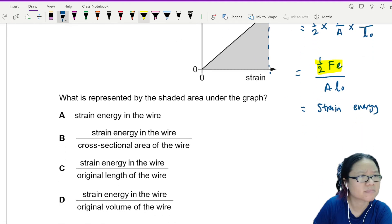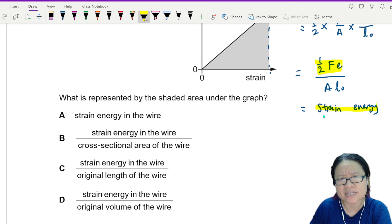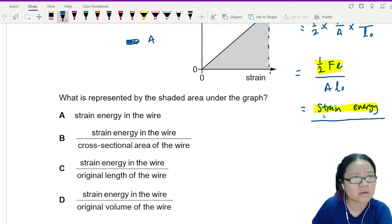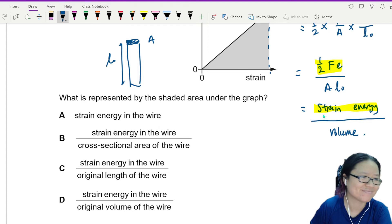What is area multiplied by original length? Area multiplied by length. Feels like volume, smells like volume. I think it's volume, answer is D.